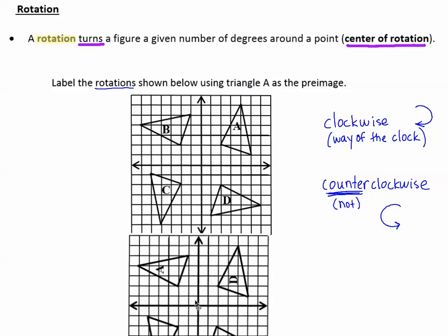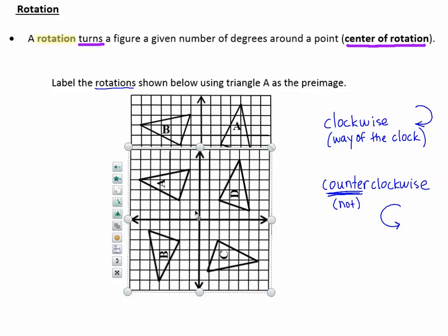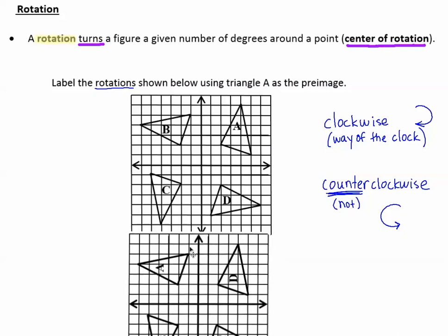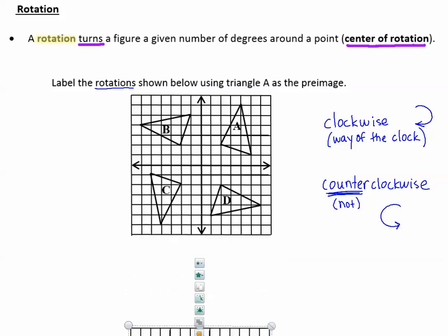In fact, I'm going to move this out of the way so that we can see, yep, this looks exactly like figure B. So figure B is a 90 degree because it's turned on its side. Figure B is a 90 degree counter-clockwise rotation.